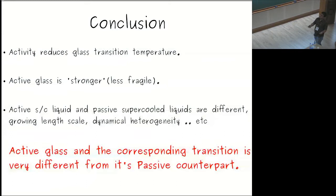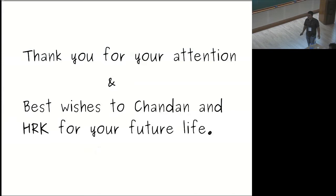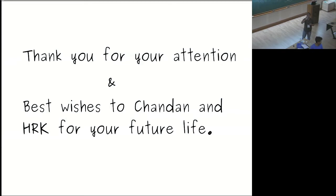In conclusion, studying these two models, activity reduces the glass transition temperature and makes the glass stronger or less fragile. The active and passive supercooled liquids are also very different: there is a growing length scale, dynamical heterogeneity is different, and many other things differ. The main message is that active glass and the corresponding transition is very different from a passive glass and the corresponding transition. Thank you for your attention.